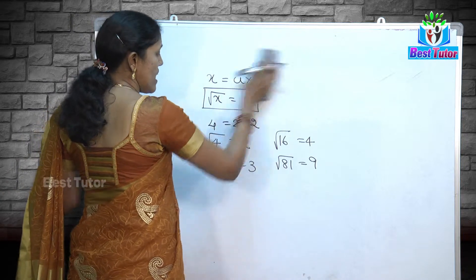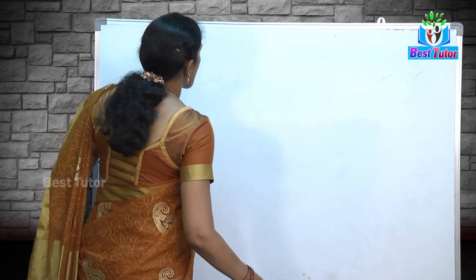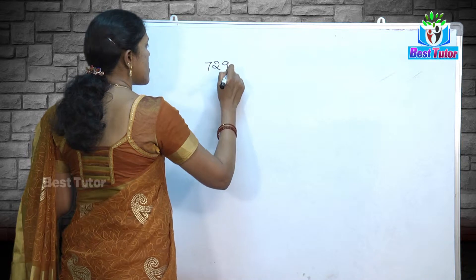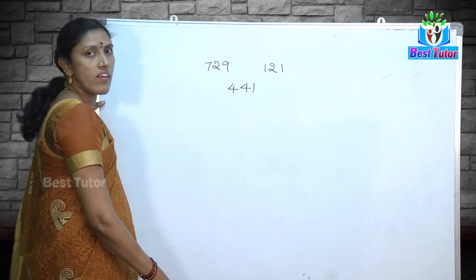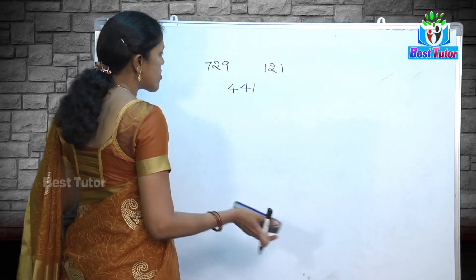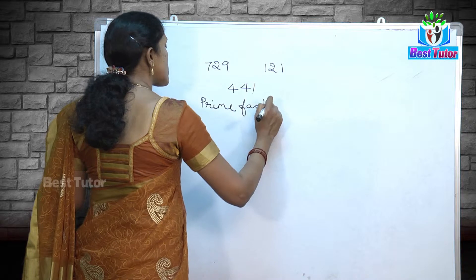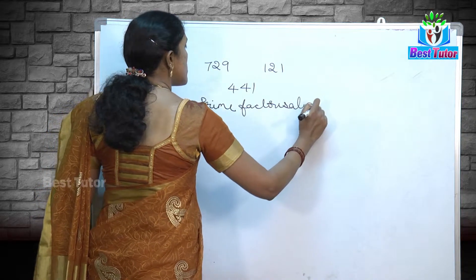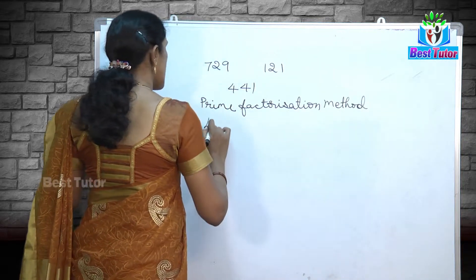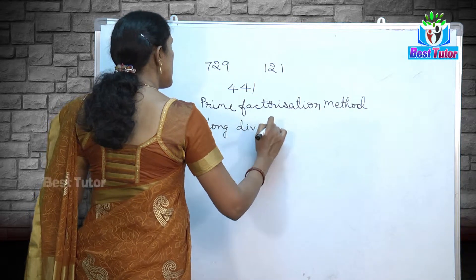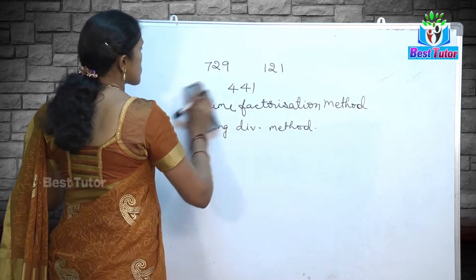For simpler numbers we can find square roots by mental calculation. But what about the square roots of bigger numbers like 729, 121, or 441? These are large numbers, so there should be a proper procedure. There are actually two types of procedures: one is the prime factorization method and the other is the long division method. In this video we are going to concentrate on the prime factorization method of finding the square root.